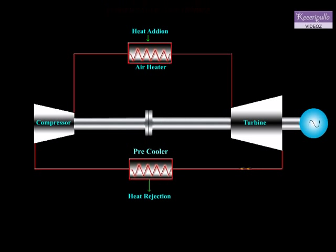The schematic diagram of the closed cycle gas turbine is shown here. This consists of essentially a compressor, gas heater, turbine, heat exchanger, and a pre-cooler.